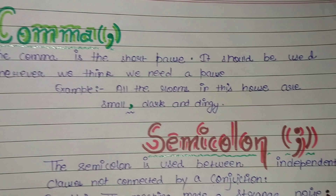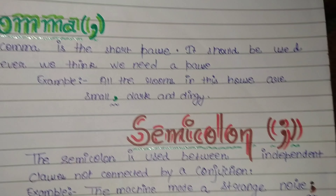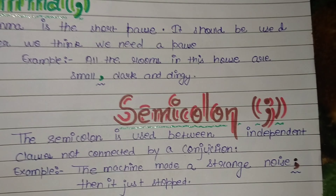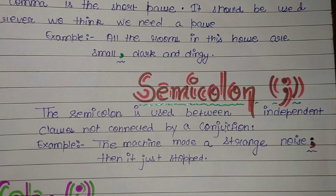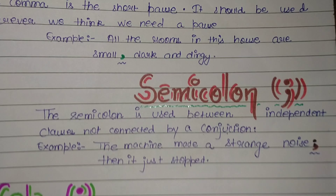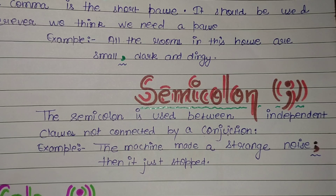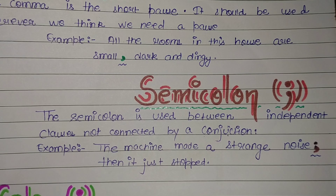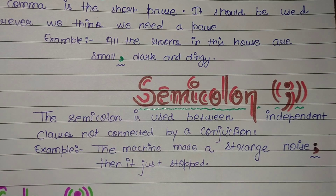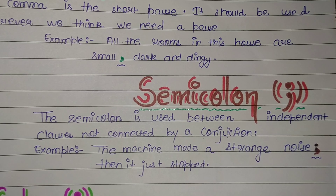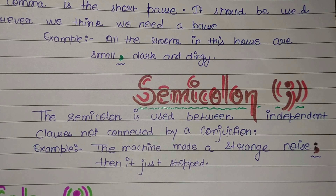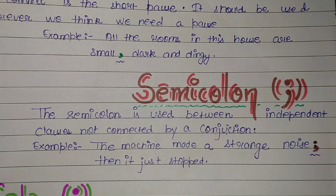The fifth one is the semicolon. The semicolon is used between independent clauses not connected by a conjunction. Example: 'The machine made a strange noise; then it just stopped.'